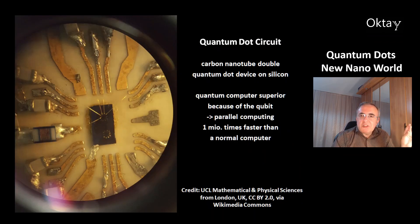Another application is a quantum dot circuit. This is a carbon nanotube double quantum dot device on silicon. The quantum computer is faster compared to today's normal computers because of the qubit, which can have more than two states. This allows parallel computing. And the quantum computer is up to one million times faster than a normal computer.